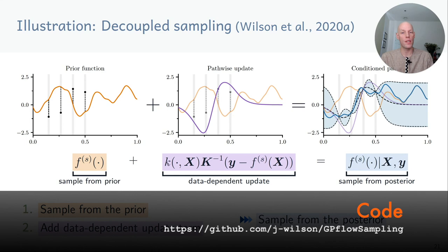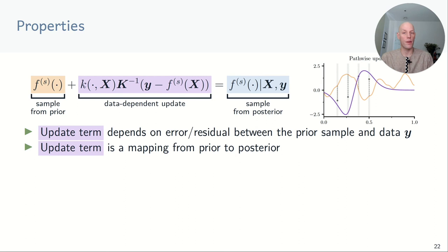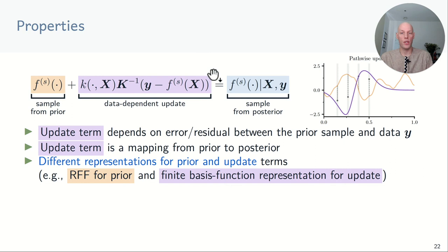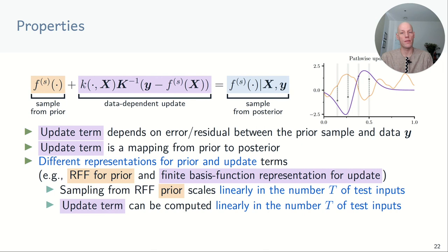The update term depends on the residual between the prior and the observed data — we can think of it as an explicit mapping between the prior and the posterior. The decoupled formulation allows us to use different representations and approximations for the prior and the update term. For example, we could use random Fourier features to approximate the prior and a finite basis function representation for the update. If we do this, sampling from the RFF prior scales linearly in the number of test points, and the update term can also be evaluated linearly, so overall sampling scales linearly in the number of test points.